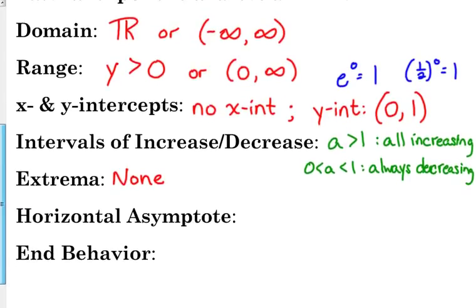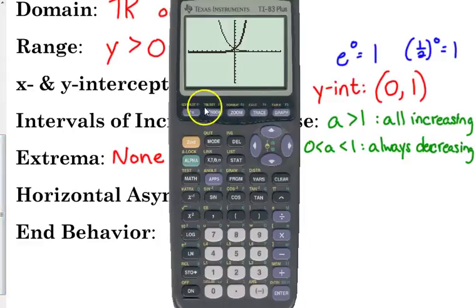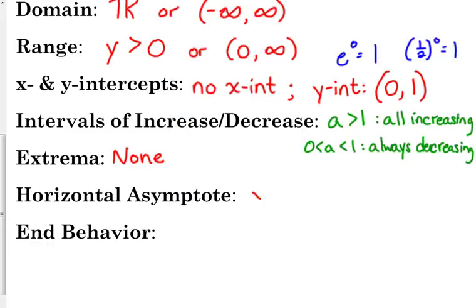Okay, we talked about asymptotes briefly with rational functions. And, it turns out that we do have a horizontal asymptote here. If you look at your function, look at how it's leveling off here. For e^x, it's leveling off on the left side. For the (1/2)^x, it's leveling off on the right side. It almost looks like it disappears. So, that is a horizontal asymptote at y = 0. So, rational functions aren't the only functions that have asymptotes. They're just the ones that we talk about it the most.